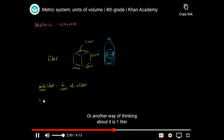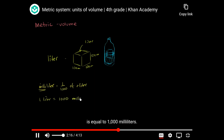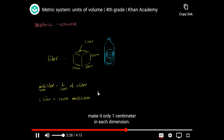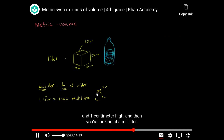We've already seen the prefix milli — it basically means one thousandth. So a milliliter means one thousandth of a liter, or another way of thinking about it is one liter is equal to one thousand milliliters. To visualize what a milliliter looks like, imagine a cube that is only one centimeter in each dimension — one centimeter wide, one centimeter deep, and one centimeter high. That volume is one milliliter.